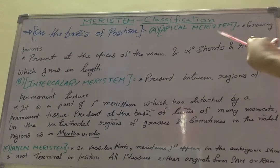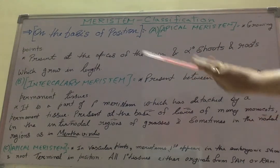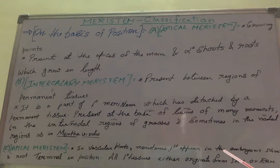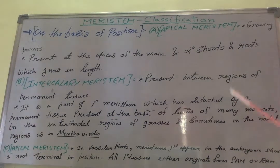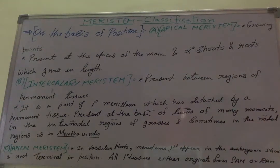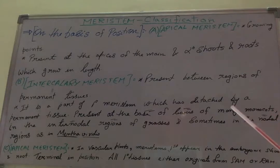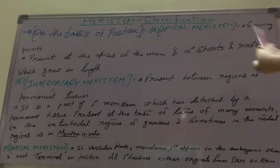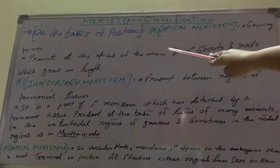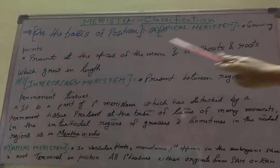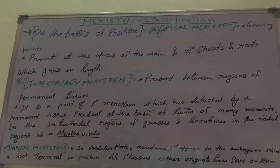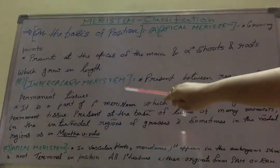Apical meristem is present at the tip of shoot and root, which are continuously growing in length. It is not found in older or mature parts, but only in those parts of the plant which are young and showing growth. So apical meristem is found at the tip of the main and secondary shoots and roots which grow in length.